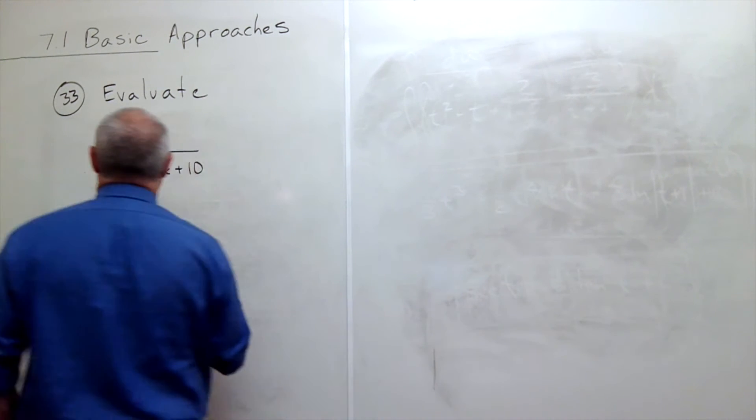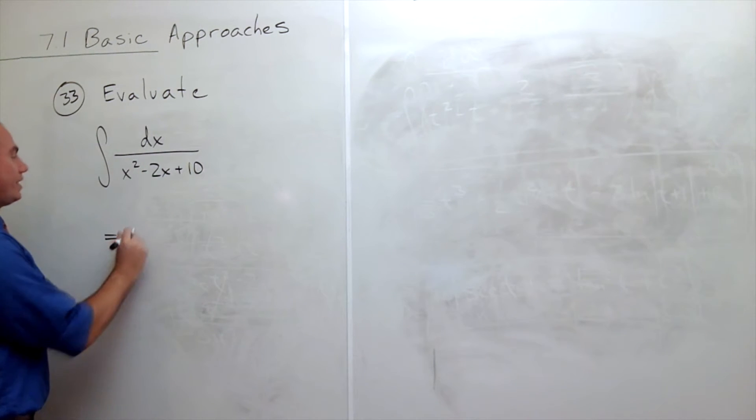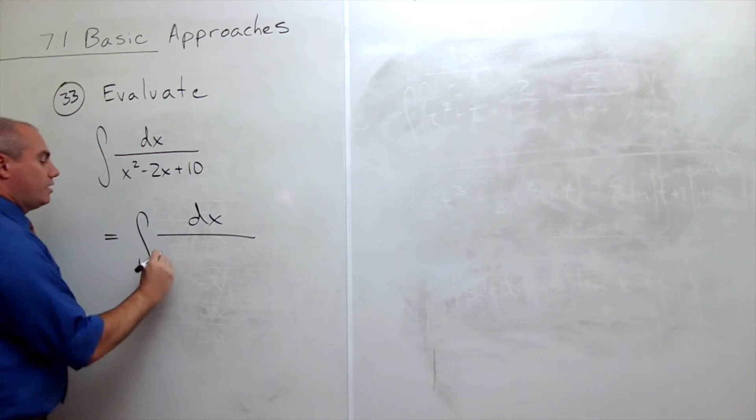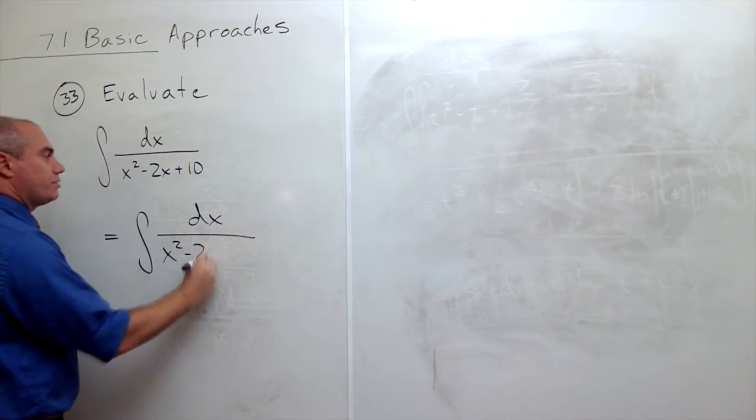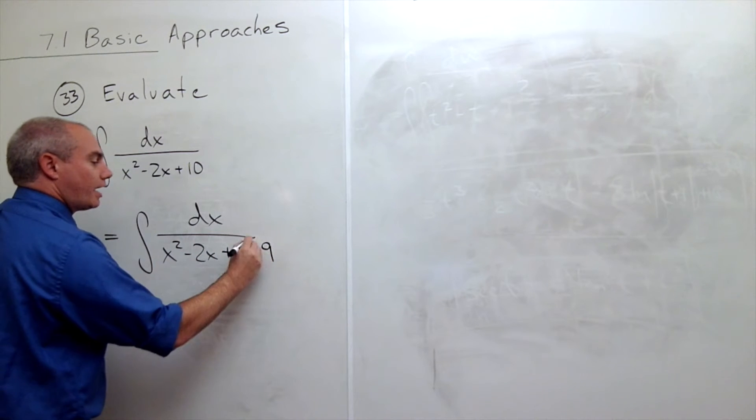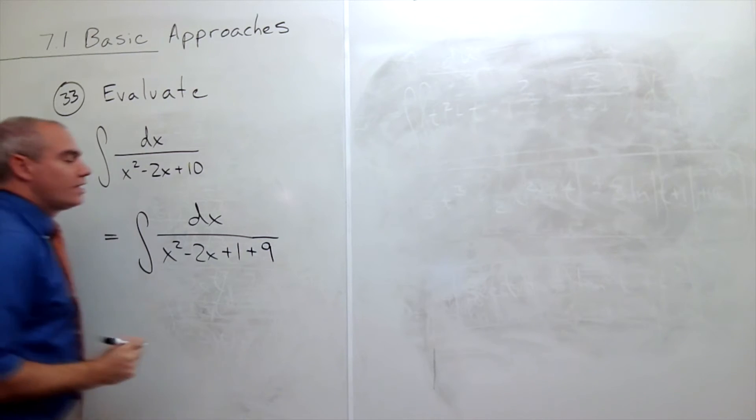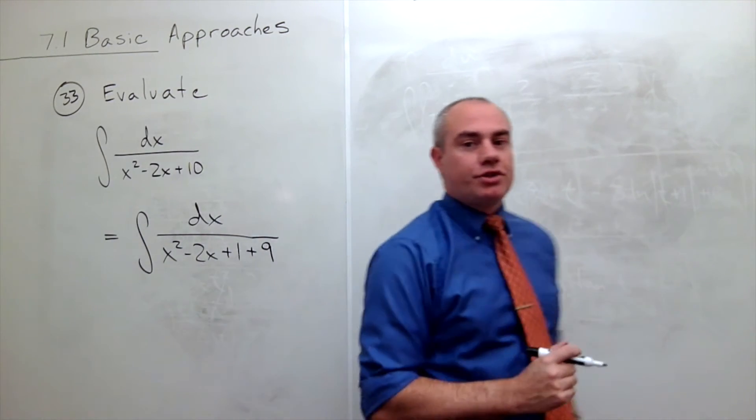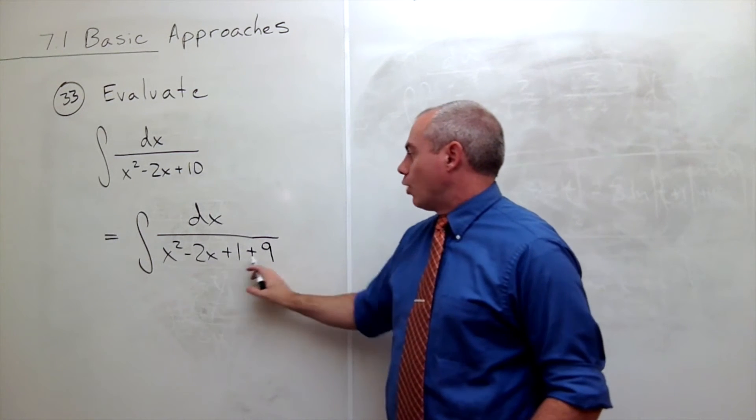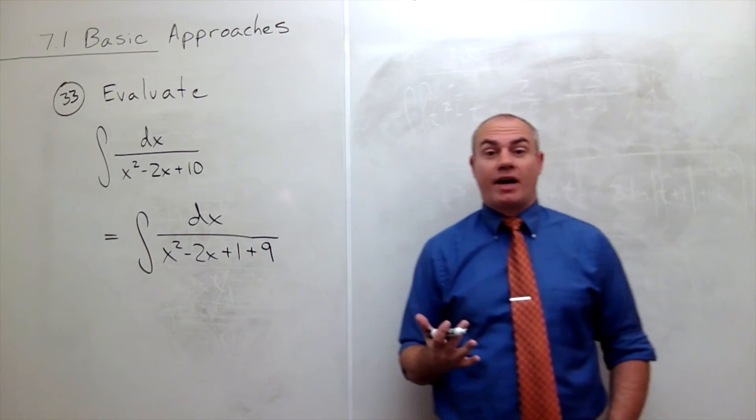So let's rewrite. I could write this as the integral of dx over x squared minus 2x plus 1 plus 9. So I haven't really changed anything here. I just rewrote 10 as 1 plus 9, and everything's fine there.